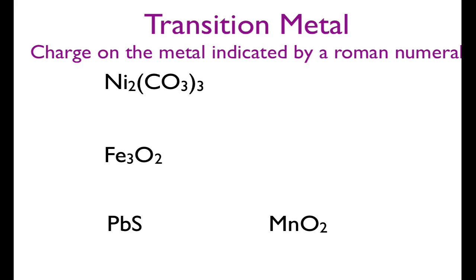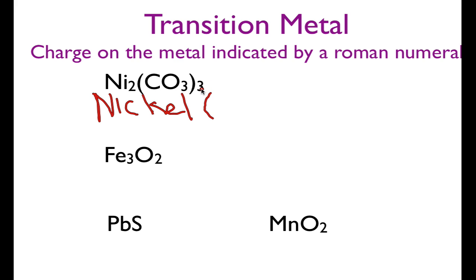Now these are a little tricky — these are transition metals. The metal here is nickel, so I'm going to write down nickel. In order to designate the kind of nickel, because transition metals can form more than one charge, we have to figure out what the charge is on the nickel. We can use what's called the reverse crossover rule. There are two nickels and three carbonates, so we take the three from the carbonate — that tells us the charge on the nickel is three. So we write nickel(III) carbonate.